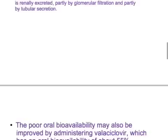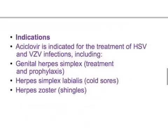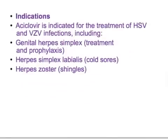The poor oral bioavailability may be improved by administering valacyclovir, which has an oral bioavailability of about 55 percent. Valacyclovir is then converted to acyclovir by hepatic first-pass metabolism.